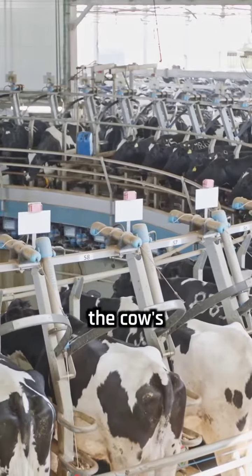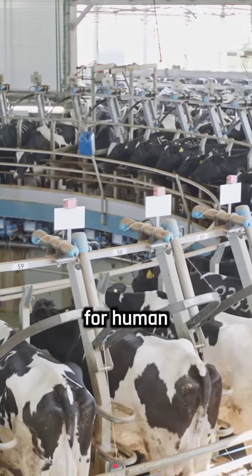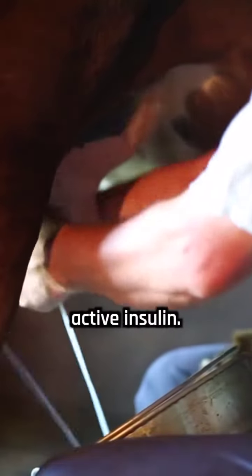The new method harnesses the cow's natural milk production capabilities as a biological factory for human pro-insulin, the precursor to insulin. Surprisingly, the cow's mammary gland even performed the conversion to active insulin.